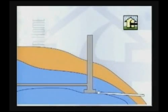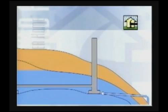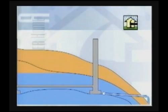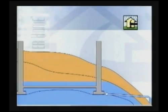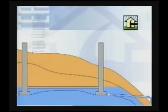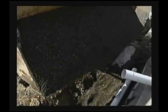Where the footing drain leaves the perimeter of the house, connect to a non-perforated pipe of the same diameter and run this pipe to a storm sewer, dry well, or a suitable above-ground discharge point. Cover the perforated drain pipe with 3-quarter-inch washed gravel and cover the gravel with a geotextile filter fabric.